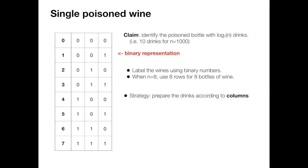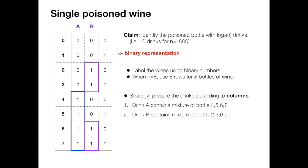Next we are going to prepare the drinks according to the columns. So the first drink contains bottles 4, 5, 6, 7, which are the wines that have digit one in the first column. The second drink contains the mixture of bottle 2, 3, 6, and 7, which are the ones that have digit one in the second column. And the third drink contains the mixture of 1, 3, 5, 7, which are the ones that have digit one in the third column. So now we get our three drinks and we are going to show that using these three drinks we are able to figure out the poisoned wine.